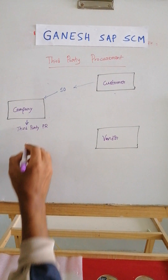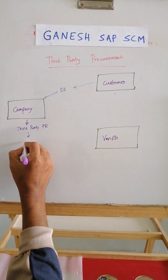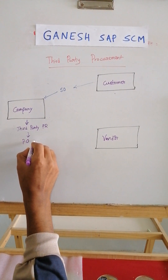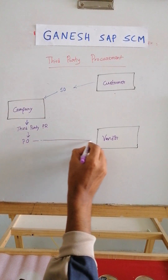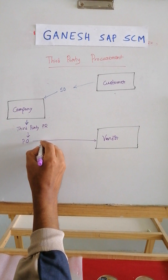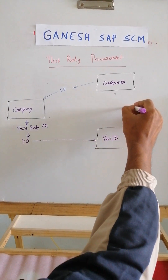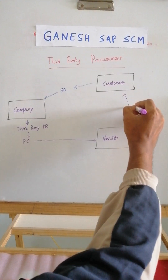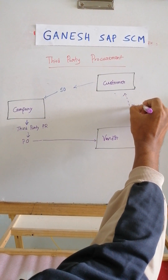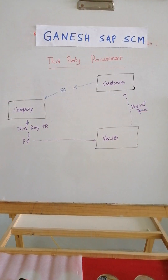The third-party purchase requisition will be converted to a purchase order, and this PO will be sent to the vendor. The PO will contain the address to deliver the goods to the customer, so the physical goods will be sent directly to the customer.